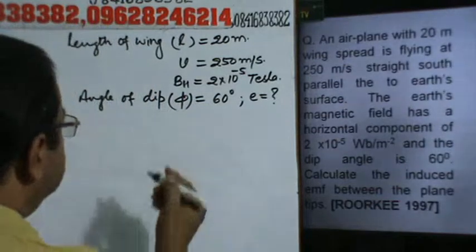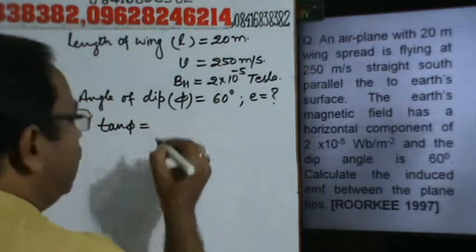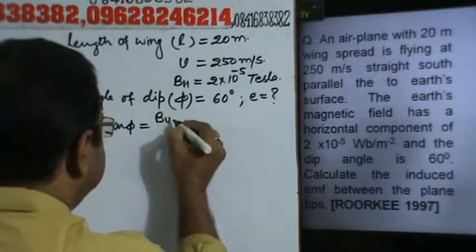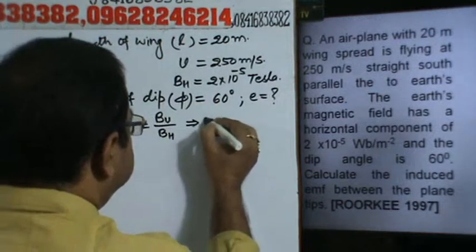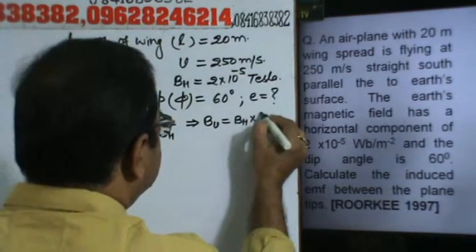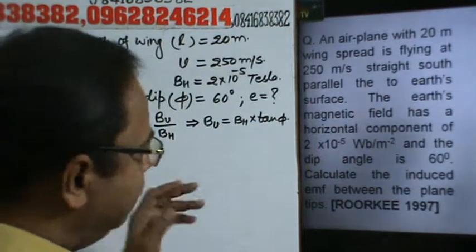Then tan phi is equal to the vertical component Bv by Bh. So this implies Bv is equal to Bh into tan phi.